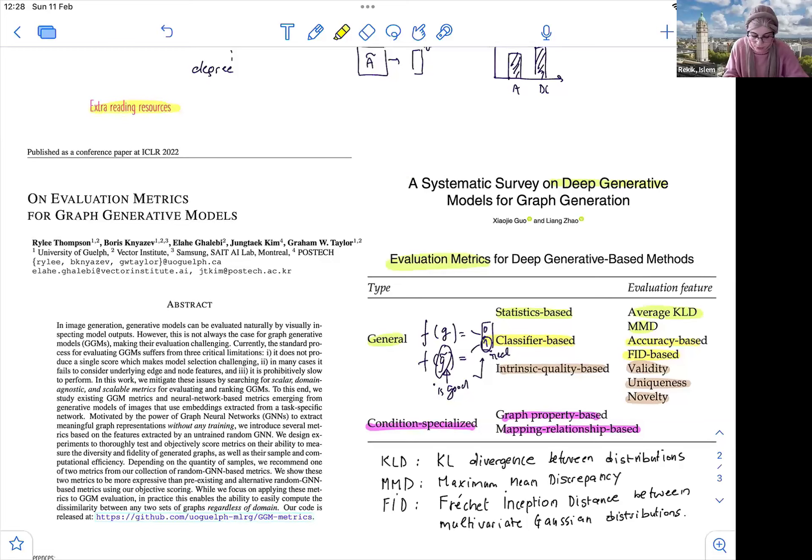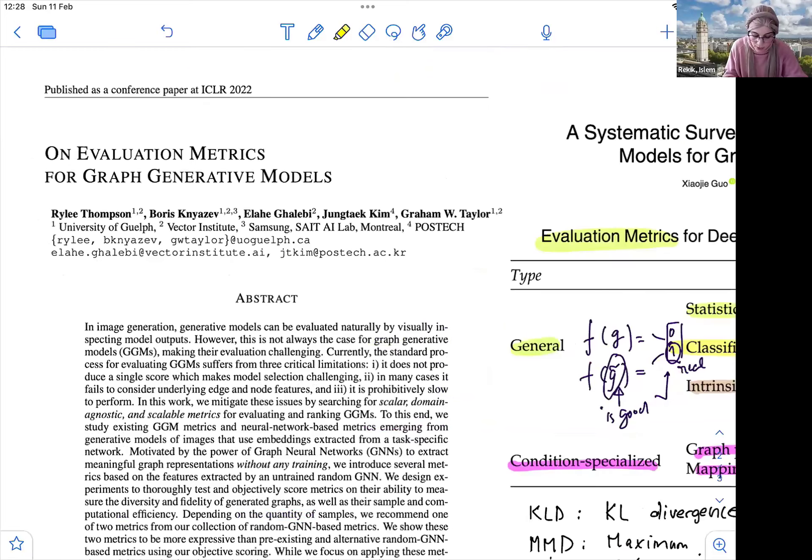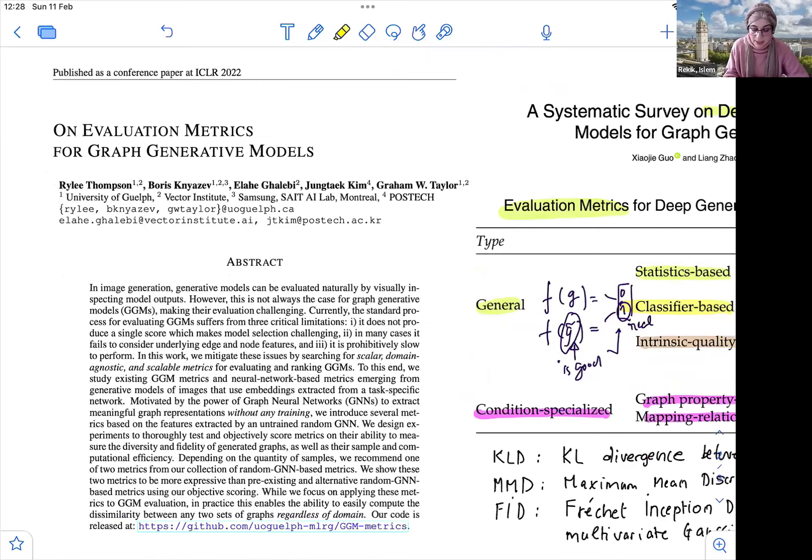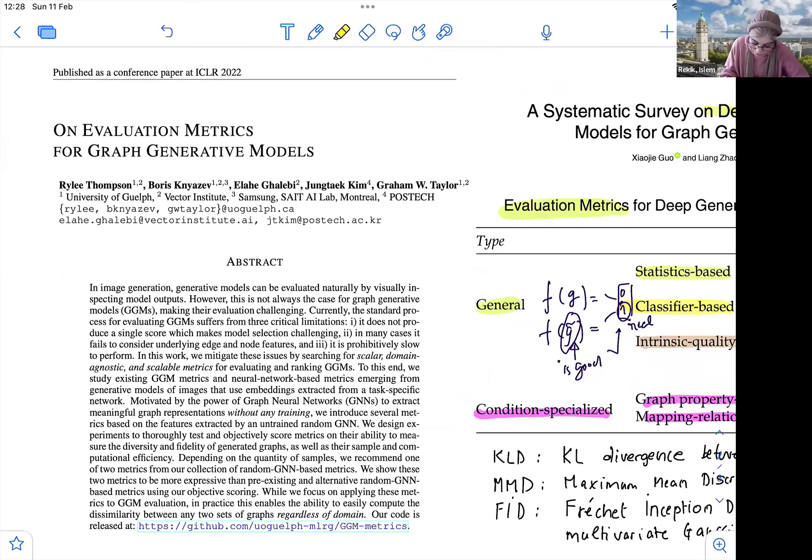So this paper was published recently in ICLR, actually 2022, on evaluation metrics for graph generative models, how to evaluate graph generative models. So here they say, basically, currently the standard process for evaluating GGMs suffers from three critical limitations.